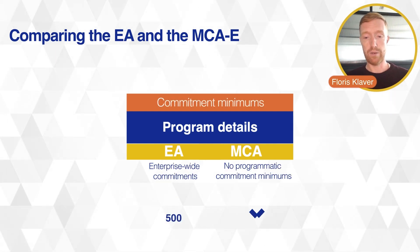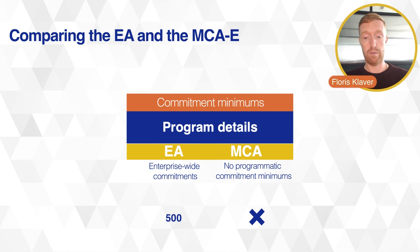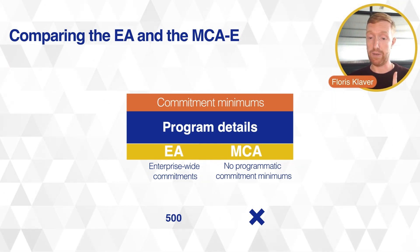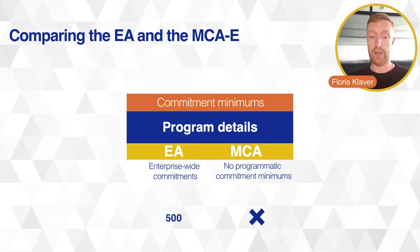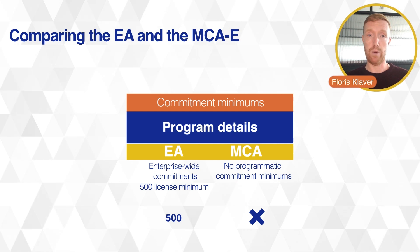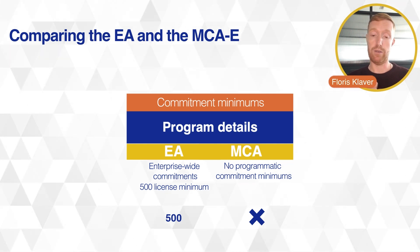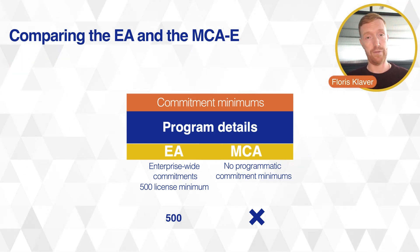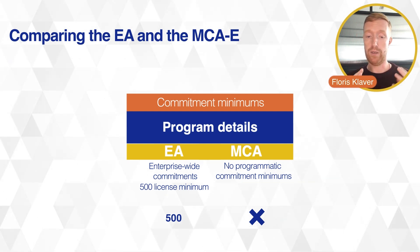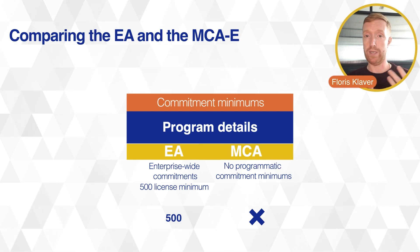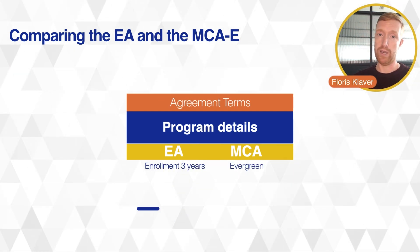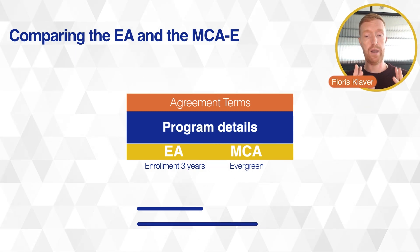For commitment minimums, in the MCAE there is no minimum — you can sign up for as little as one license. For the EA the minimum is still 500 licenses and it requires an enterprise-wide commitment based on the products you're buying. For instance, if you're buying solely M365 suites the minimum is 500, but you don't necessarily have to do that enterprise-wide. The agreement term for the MCAE is evergreen, and for the Enterprise Agreement it's three years.